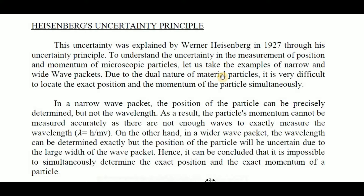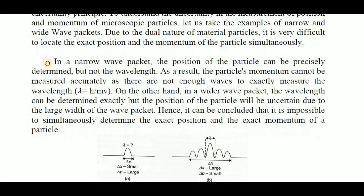Due to this condition, we cannot locate the exact position and momentum of the particle simultaneously. In a narrow wave packet, if we consider this packet, the position of the particle can be precisely determined. We can determine it easily because of the probability — we can easily locate the particle in this small size of packet, but not the wavelength. Because we are having only one wave here, we cannot measure the wavelength. As a result, the particle's momentum cannot be measured accurately as there are not enough waves to exactly measure the wavelength. That is, lambda equals h by mv, according to de Broglie's relation.